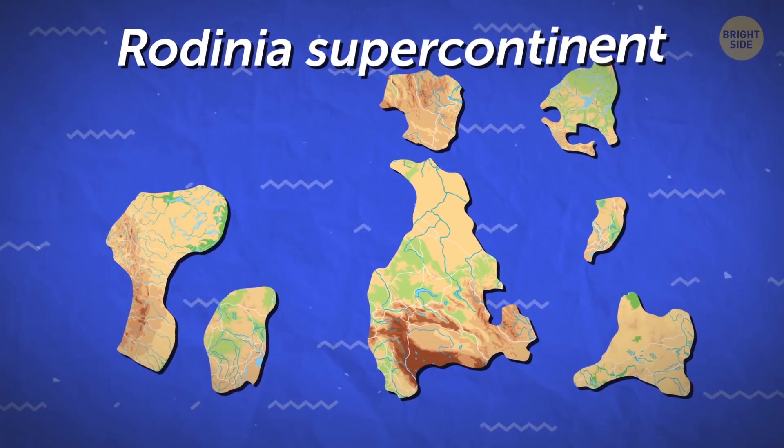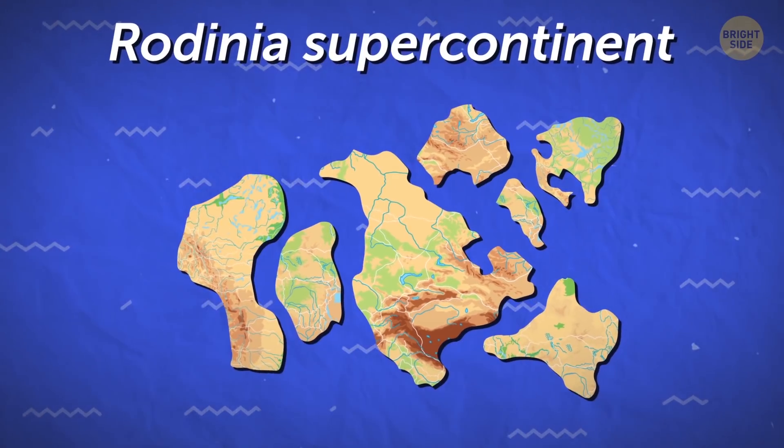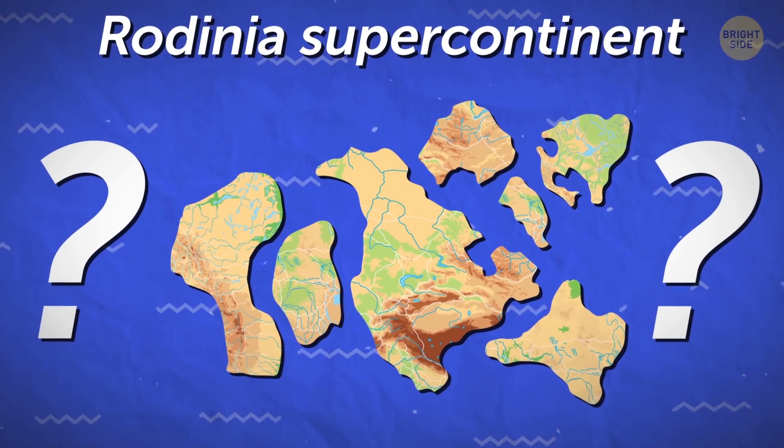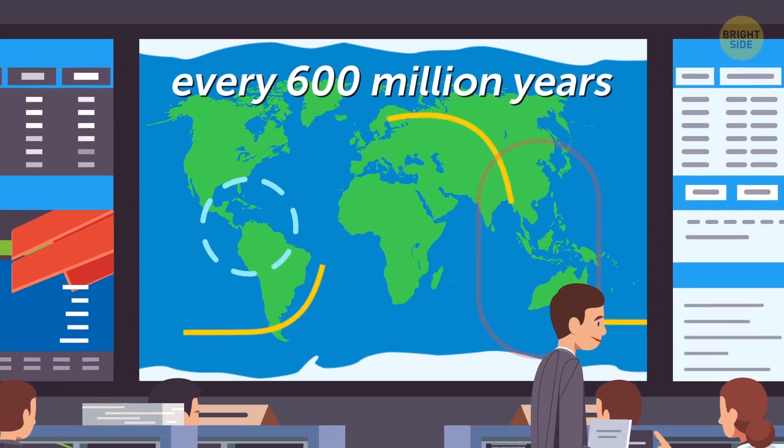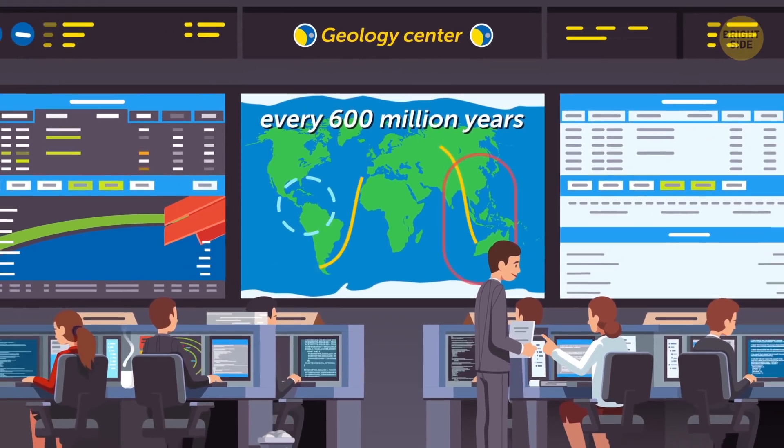The historical period when the land connected to become the Rodinia supercontinent and the timeframe it split are a bit foggy. Geologists believe that roughly every 600 million years, we are met with the same fate.